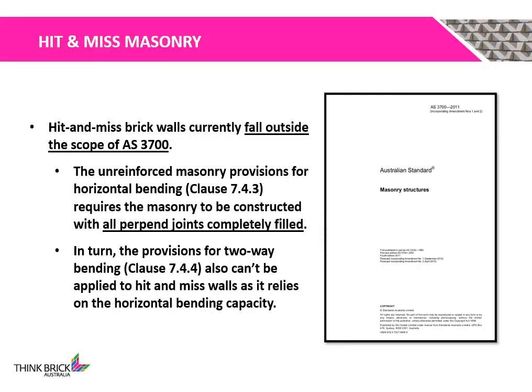Hidden Mist Brick Walls currently fall outside the scope of AS3700. This is because the masonry provisions stated in AS3700 account for all perpen joints being completely filled. Hidden Mist Brick Walls don't have any vertical perpen joints, and thus modifications must be made to the calculation process stated in AS3700.